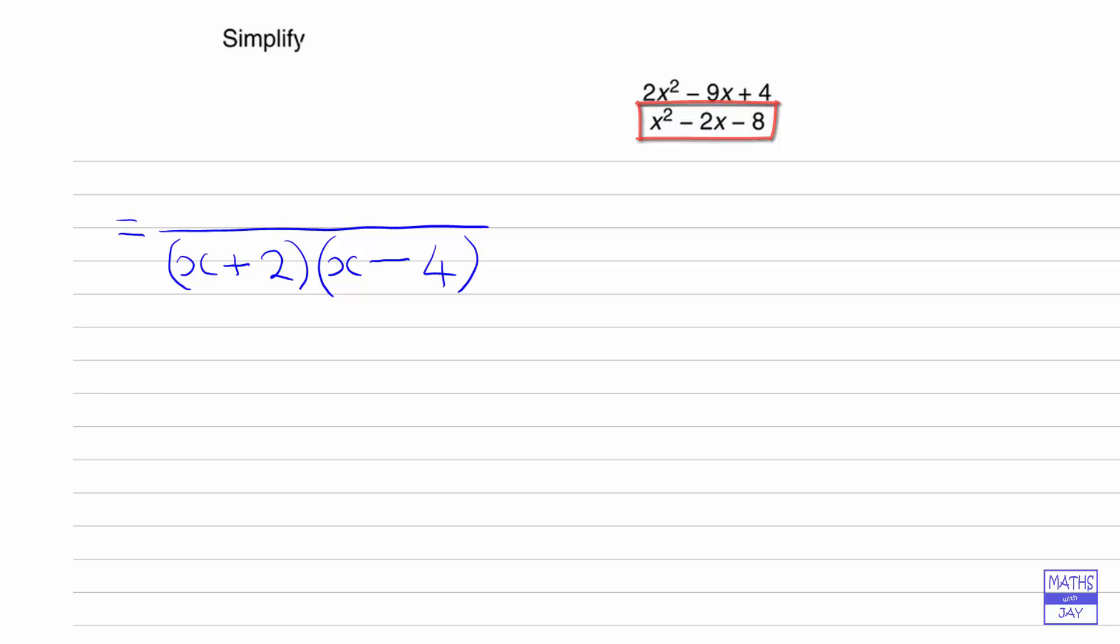When we're looking at the numerator, we're expecting that one of the brackets will be the same as one of the brackets in the denominator, but we can have that at the back of our minds. To get 2x squared, we must have 2x and x, and we can see that both signs have got to be negative.